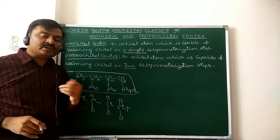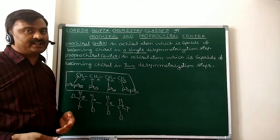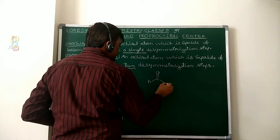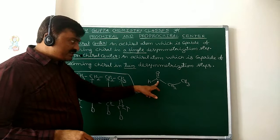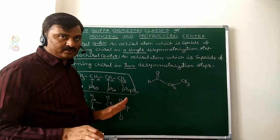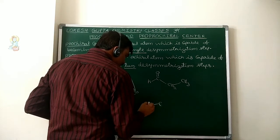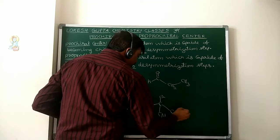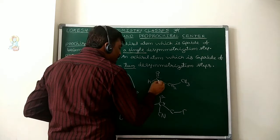The Pro Chiral center is not only for sp3 carbon; it may also be an sp2, planar trigonal, sp2 carbon. For example, take Propanal. None of the carbons is a Chiral center now. But if you add a group — for example, using Grignard reagent or CN minus — in a single desymmetrization step by addition, this sp2 carbonyl carbon becomes Chiral. That is why it comes under Pro Chiral center.